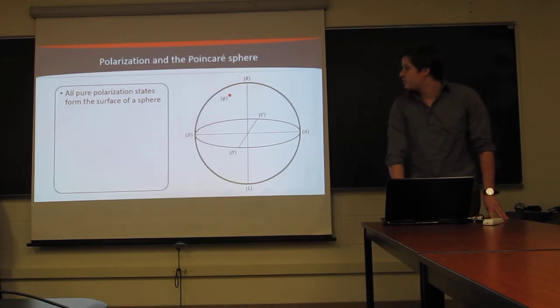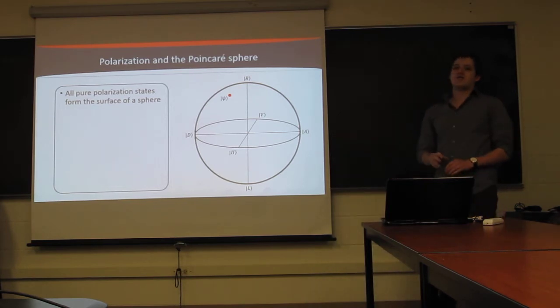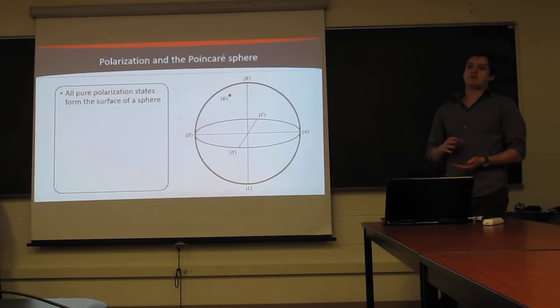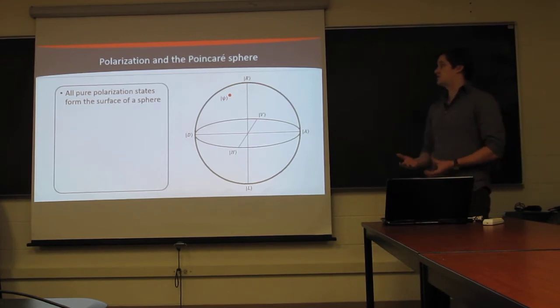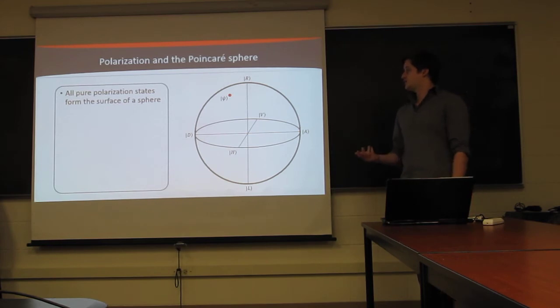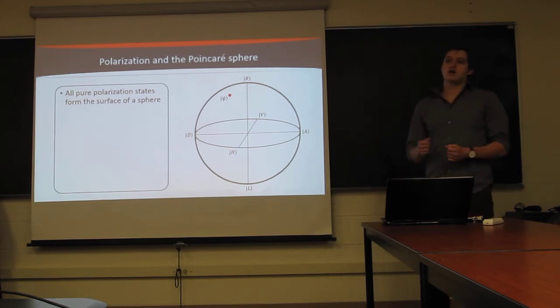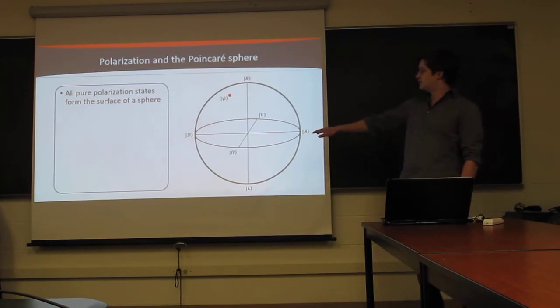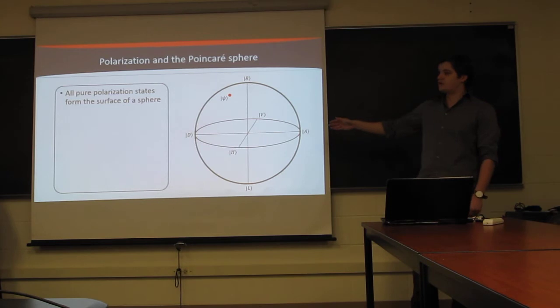Beginning with polarization. As I'm sure everybody is familiar with, all pure polarization states can actually be represented as points along the surface of a sphere, the Poincare Sphere to be specific, where orthogonal polarizations are treated as antipodal points on the sphere. So as we can see here, horizontal and vertical are across from each other, diagonal and anti-diagonal, as well as left and right circular polarization.